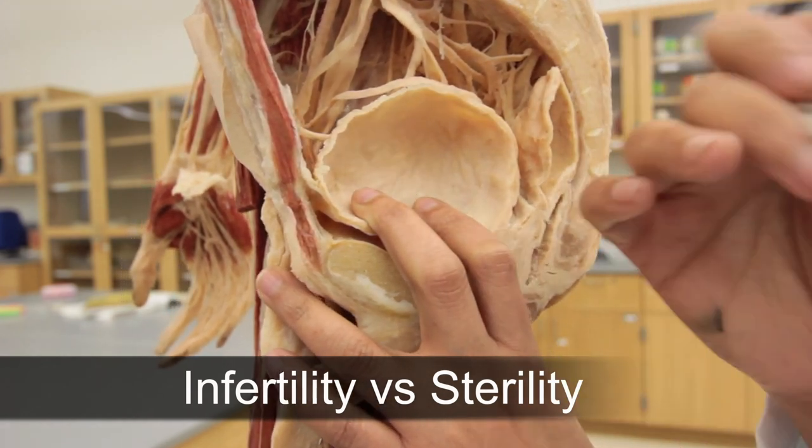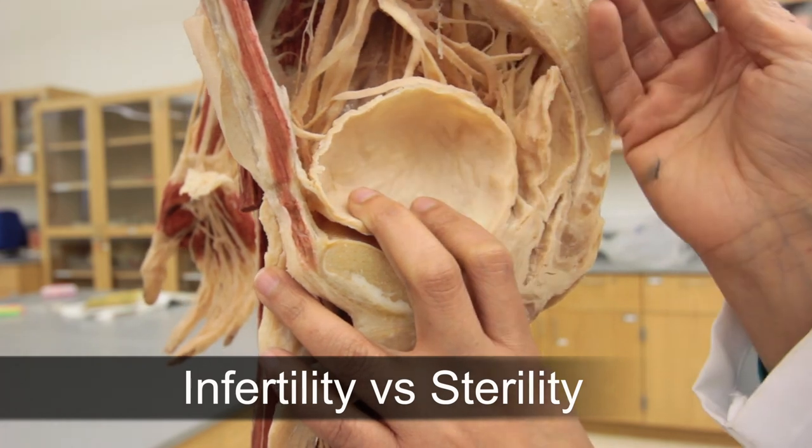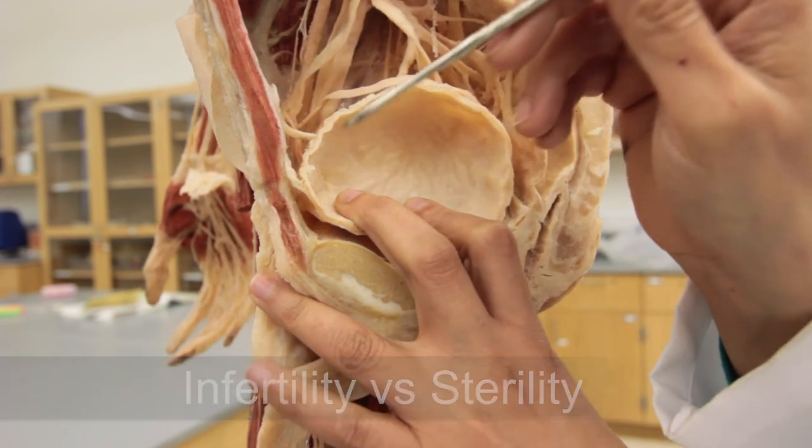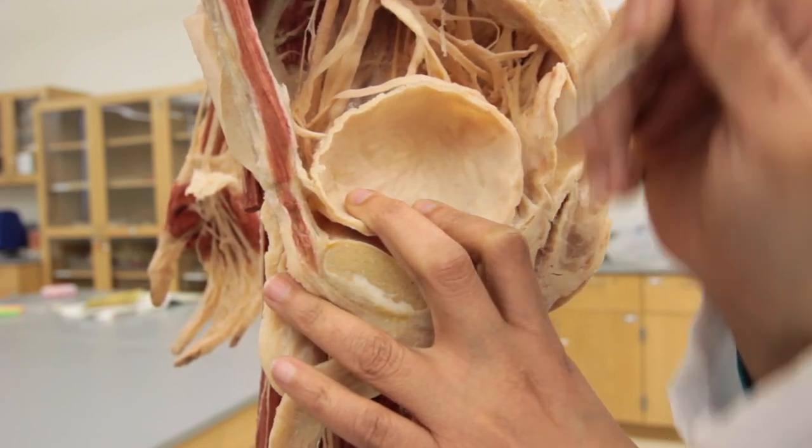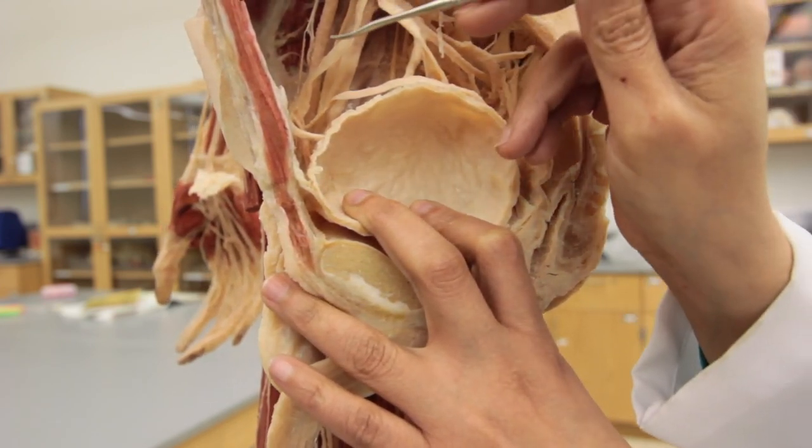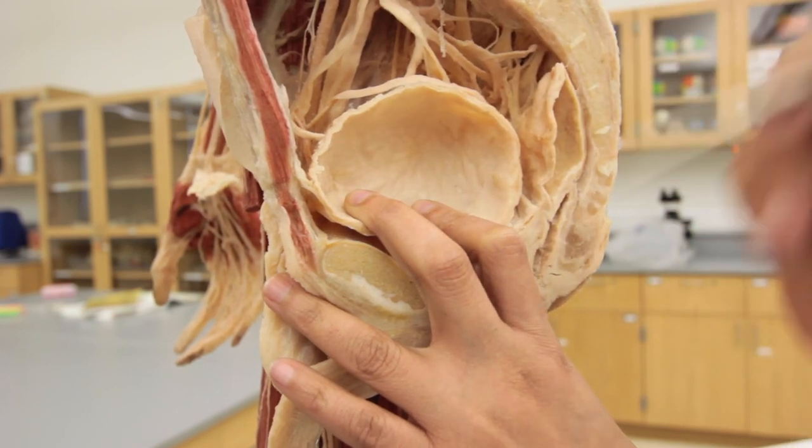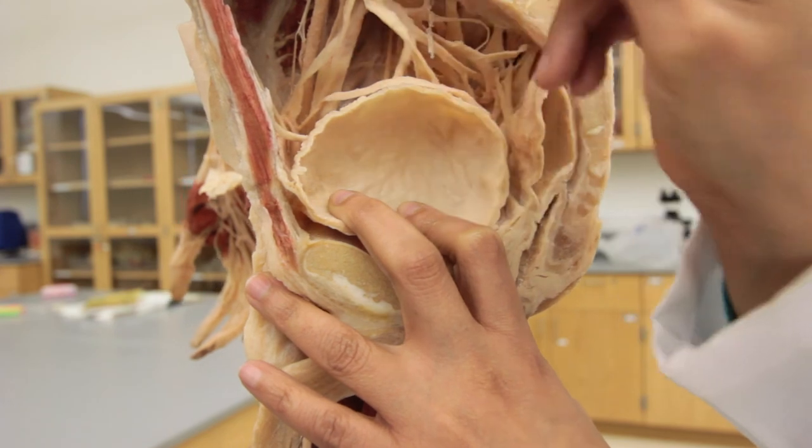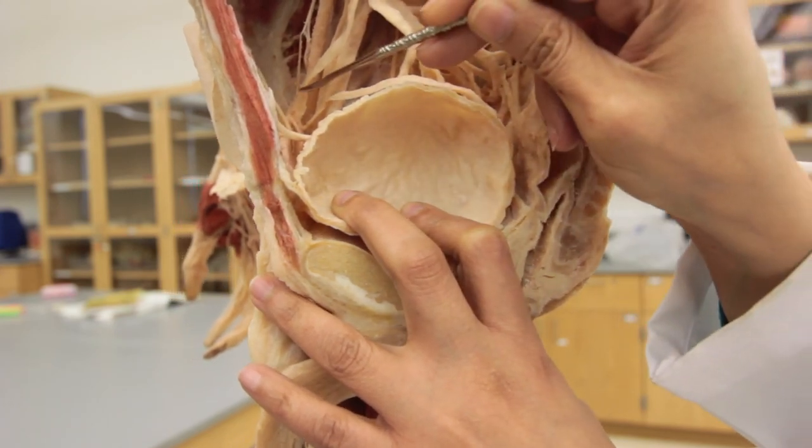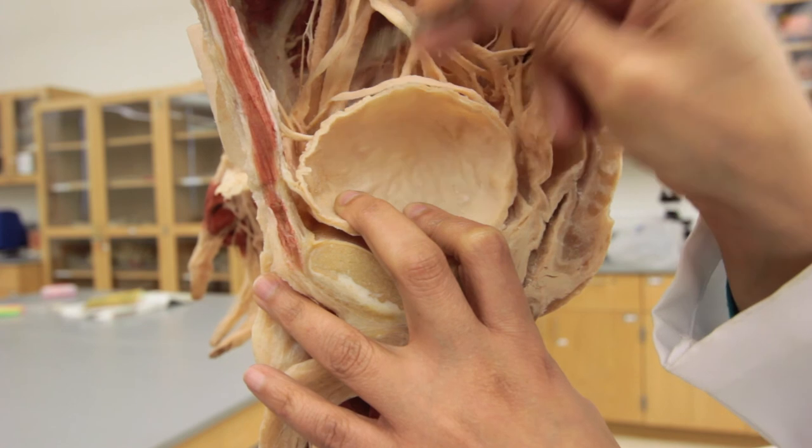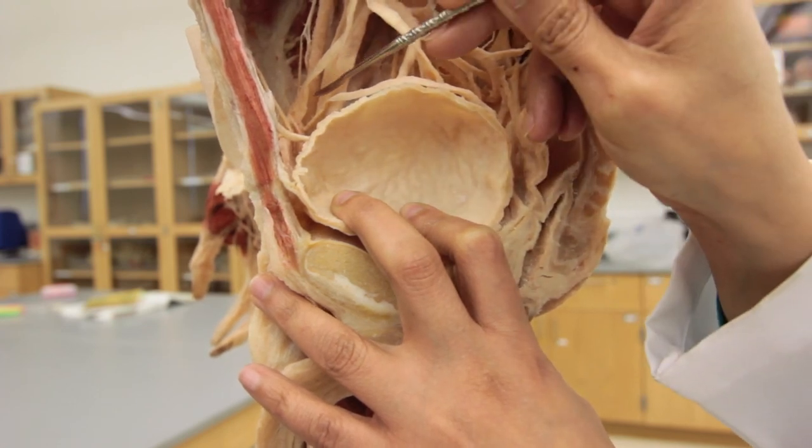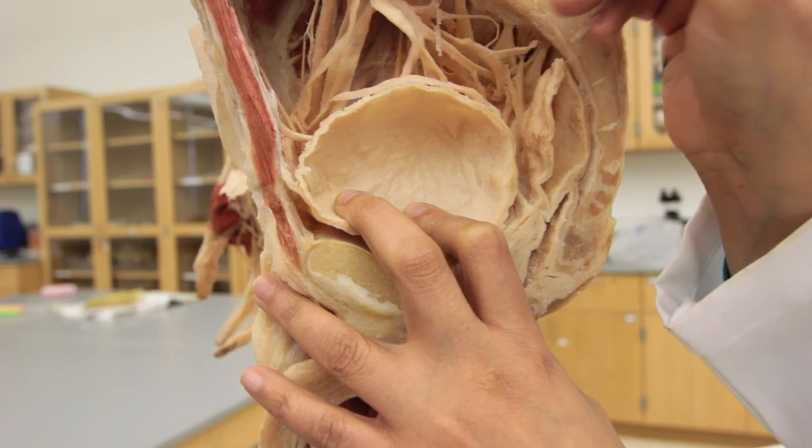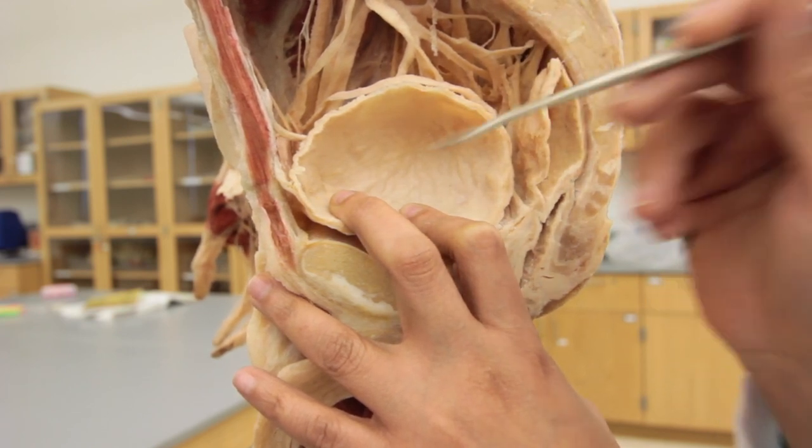But sterility is there is no production of sperms at all. Remember, I told you that the testes have to get out of the body cavity to escape the heat of the body. That is the requirement of sperm production. So when the testes in cryptorchidism is stuck up in the abdominal cavity, or within the inguinal canal, which is close to the abdominal cavity, obviously the temperature would be high. So there would be no production of sperms at all. That will lead to sterility.